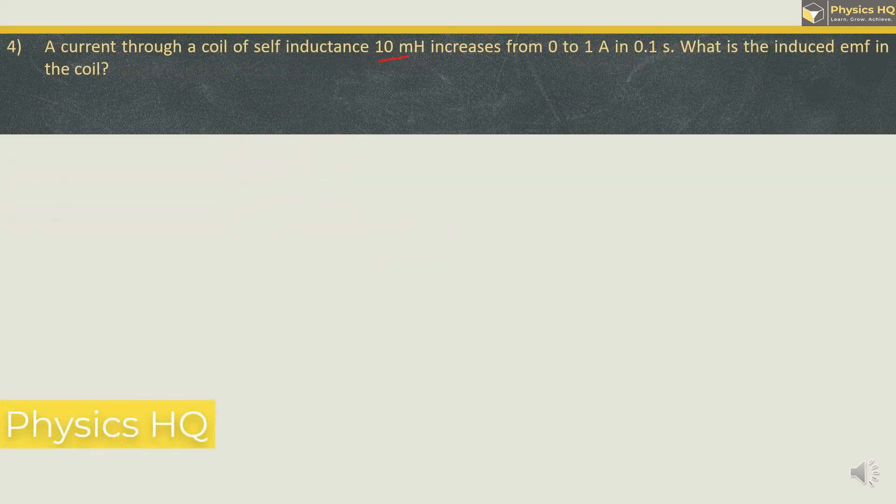A current through a coil of self-inductance 10 mH increases from 0 to 1 ampere in 0.1 seconds. What is the induced EMF in the coil? 0.1V, 1, 10 or 0.01V.